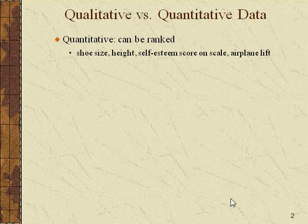Height — some people are taller than other people. Something even a little squishier like self-esteem you can still score on a scale. You can give people a set of questions and ask them things like how do you feel about yourself, or am I someone that is confident? You can add up those responses and get a scale.